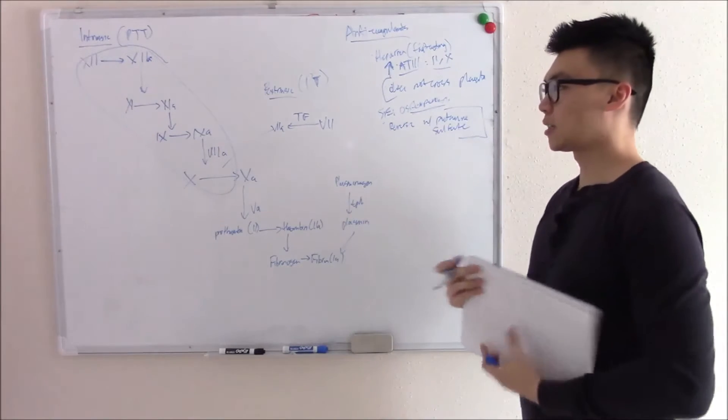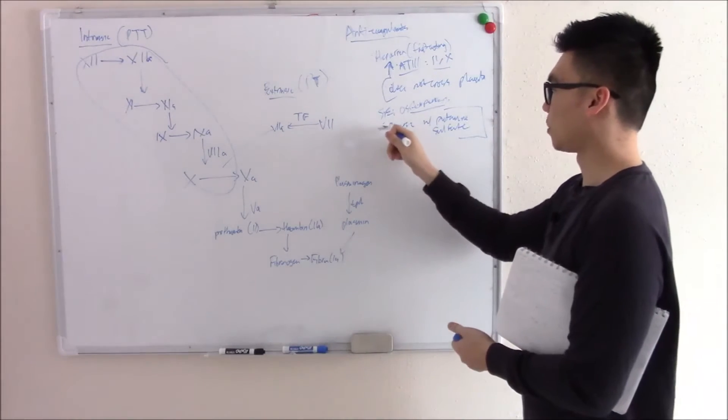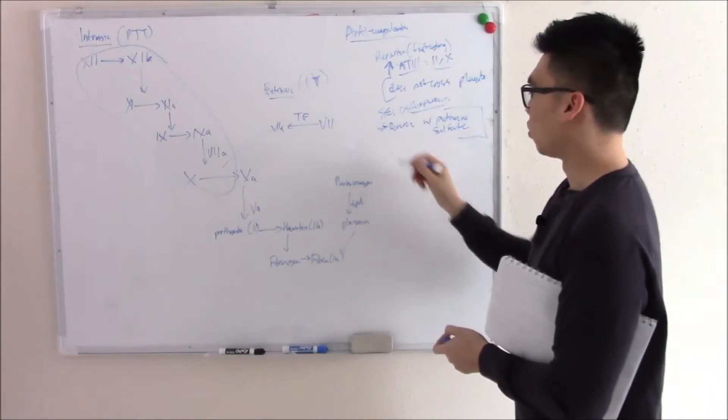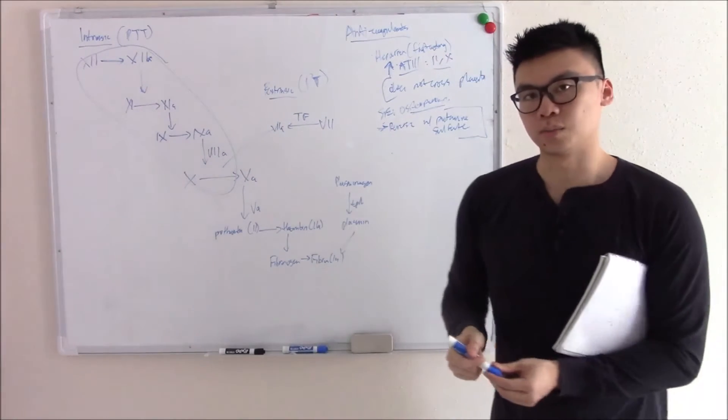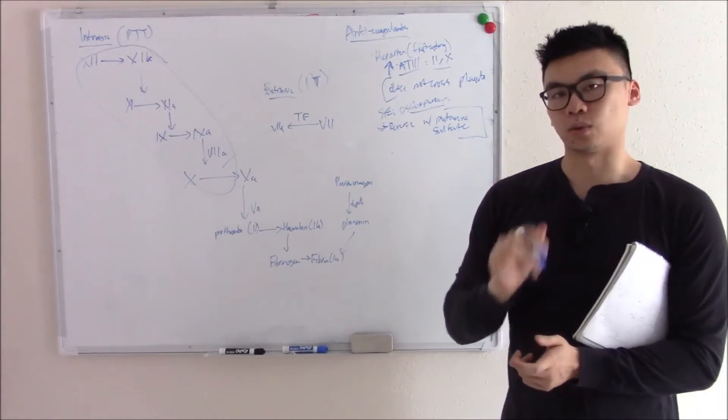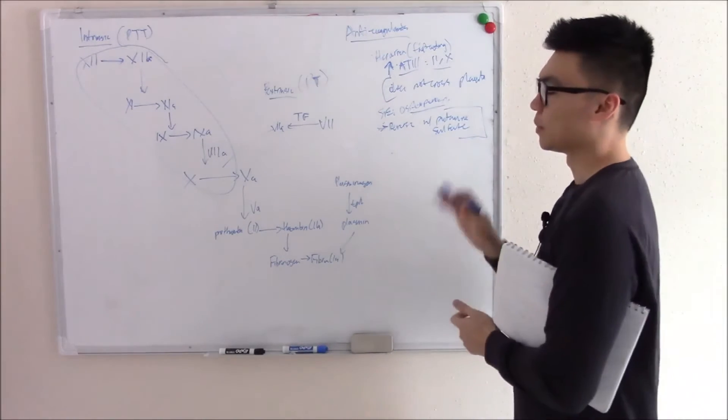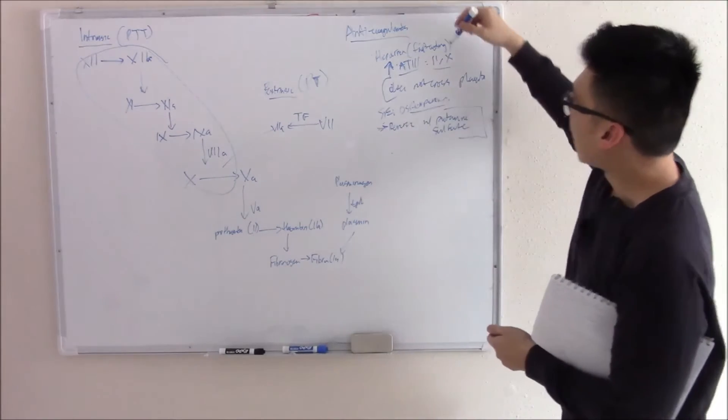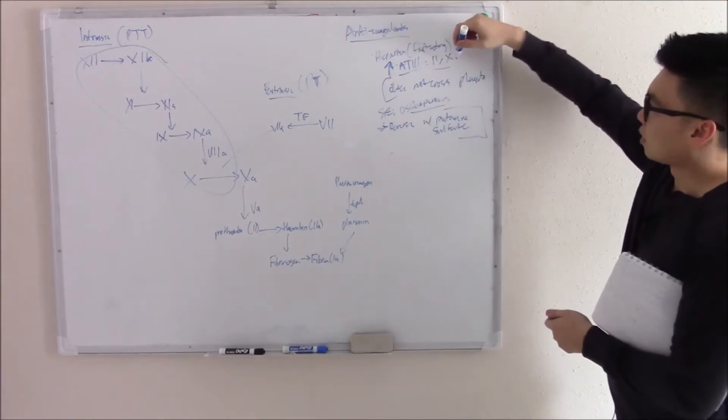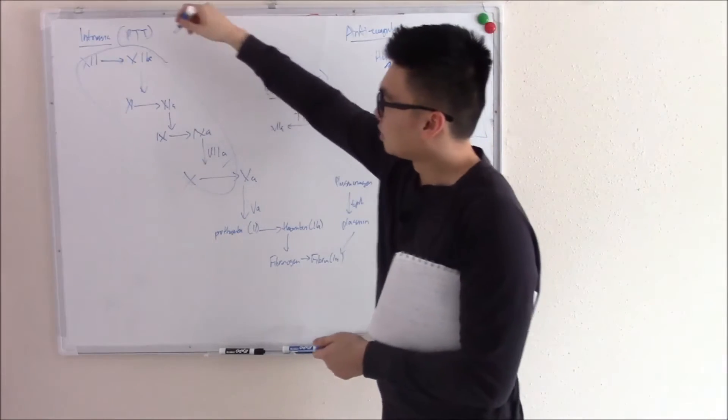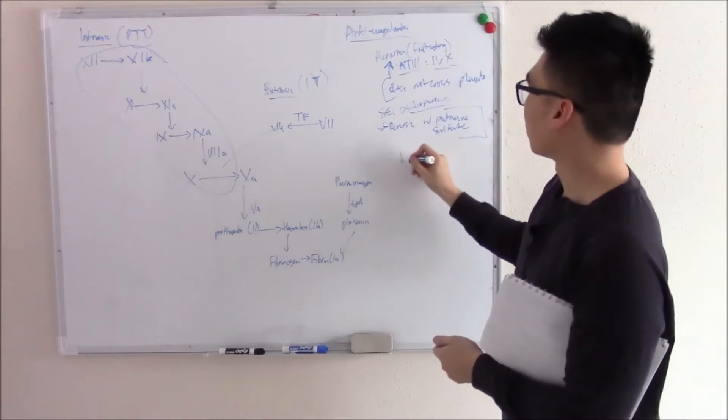Now we never want to get to the state where we're overdosing our patients on heparin. So we follow heparin very closely with one of our coag tests. PTT and PT. Which one do you think follows heparin? Would it be PT or would it be PTT? Well we said heparin works on antithrombin-3 which works on 2 and 10. The only one that works on 10 is going to be PTT. So we follow heparin with PTT.